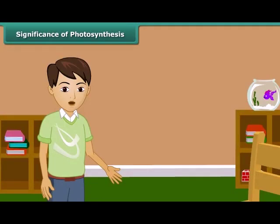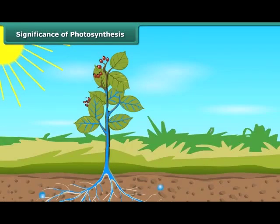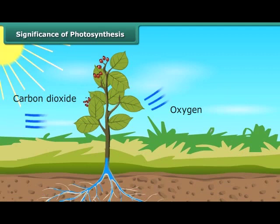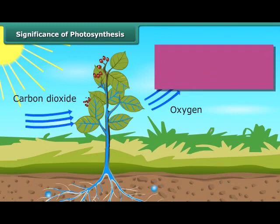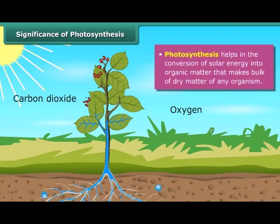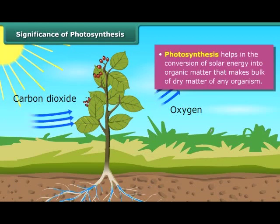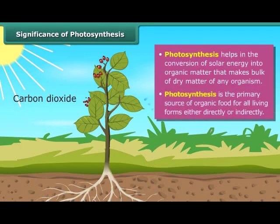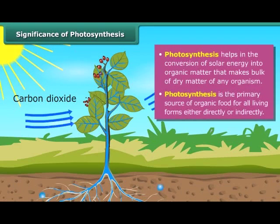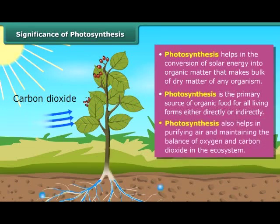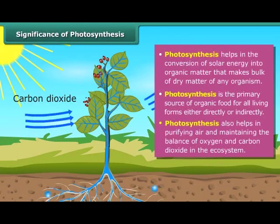Now the question is: what is the significance of photosynthesis? Photosynthesis is an important and vital process for life on this planet. This process helps in the conversion of solar energy into organic matter, and hence photosynthesis links the physical and biological world. It is the primary source of organic food for all living forms, either directly or indirectly. It also helps in purifying air and maintaining the balance of oxygen and carbon dioxide in the ecosystem.